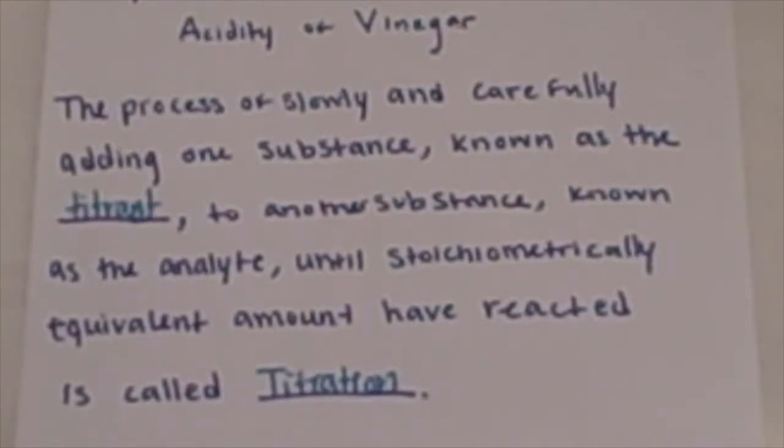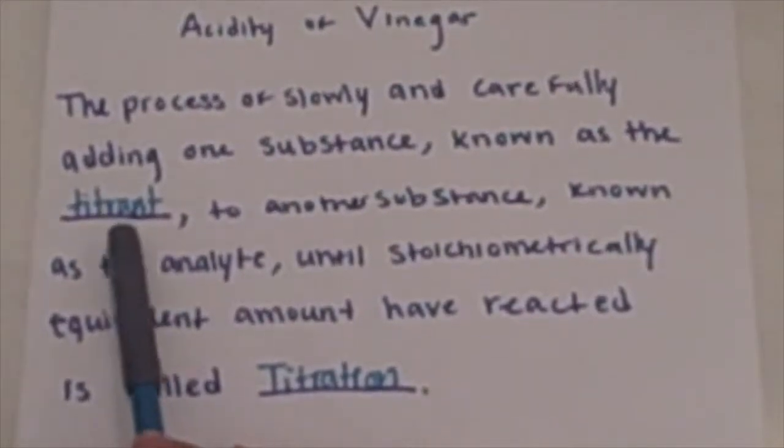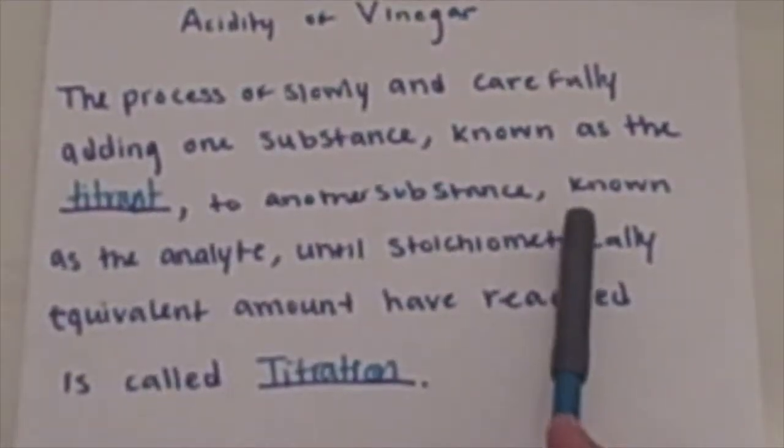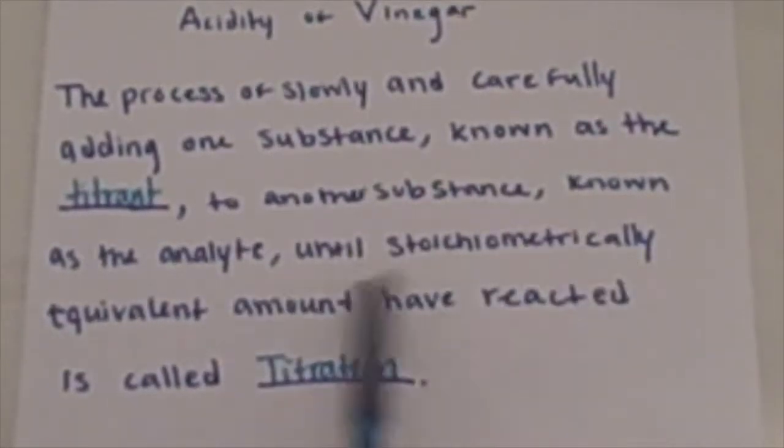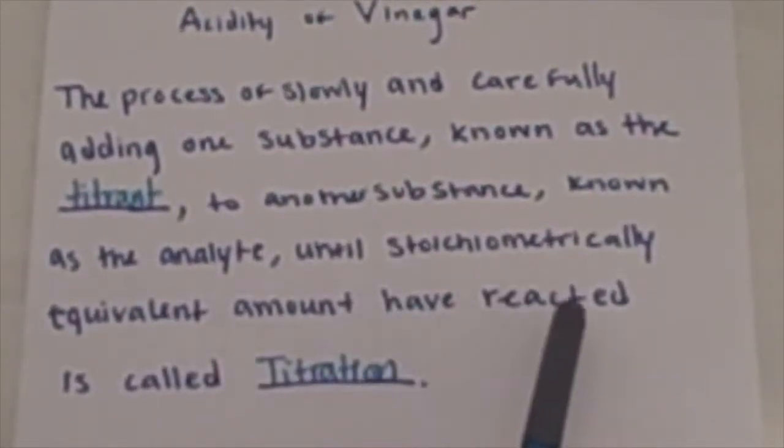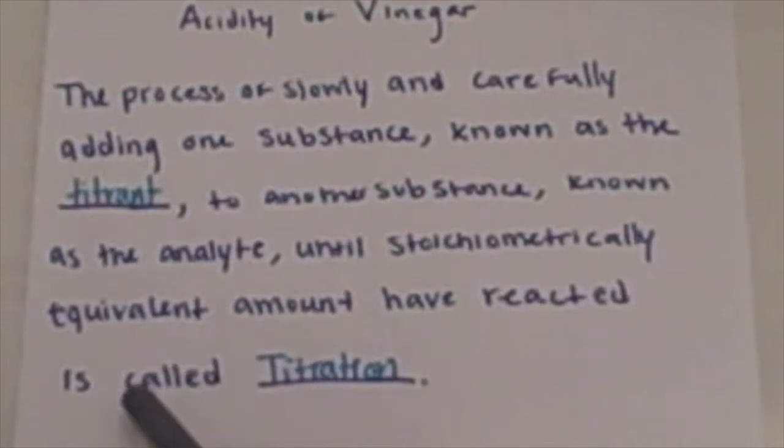Experiment 7 is on determination of acidity of vinegar. The process of slowly and carefully adding one substance known as the titrant to another substance known as the analyte until stoichiometrically equivalent amount has been reacted is called titration.